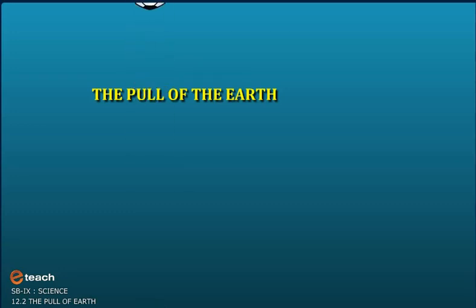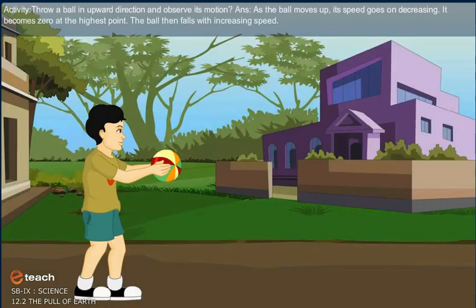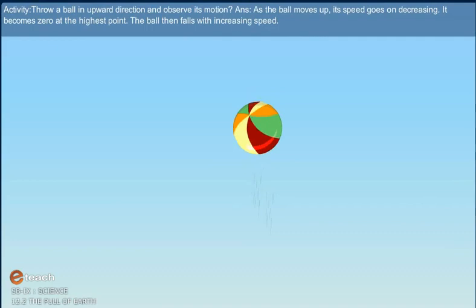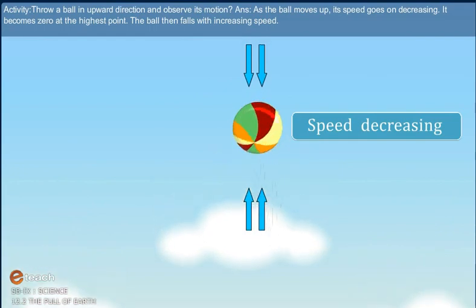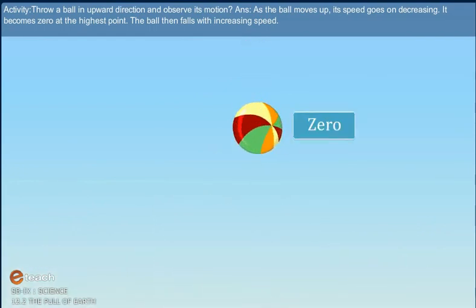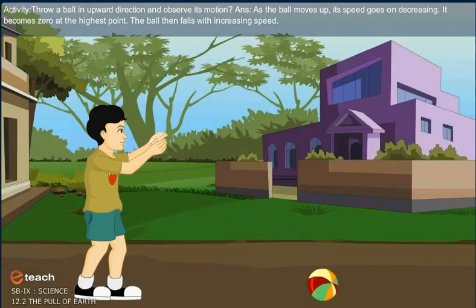We are learning about acceleration due to gravity, and mass and weight of an object. Activity: Throw a ball in the upward direction and observe its motion. As the ball moves up, its speed goes on decreasing. It becomes zero at the highest point. The ball then falls with increasing speed.